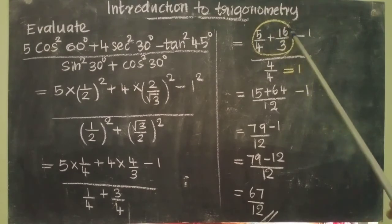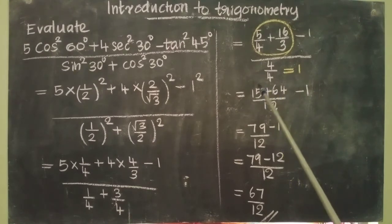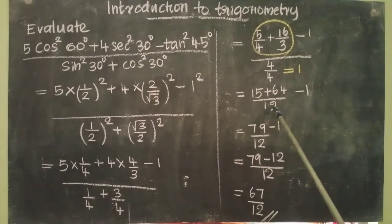Now let us cross multiply 5/4 and 16/3. We get (15 + 64)/12 - 1.